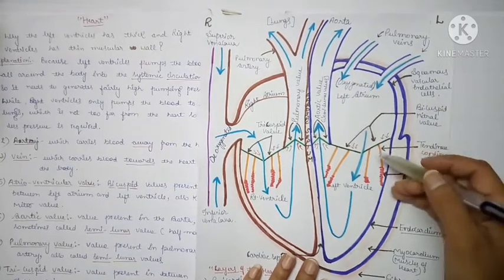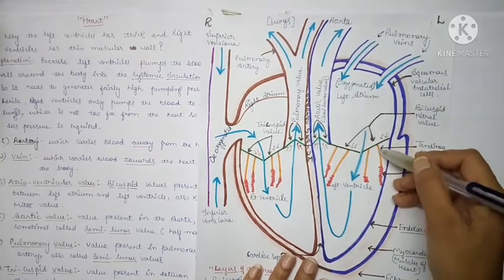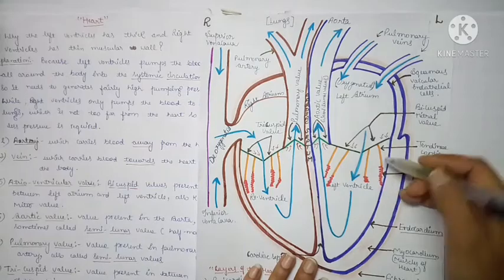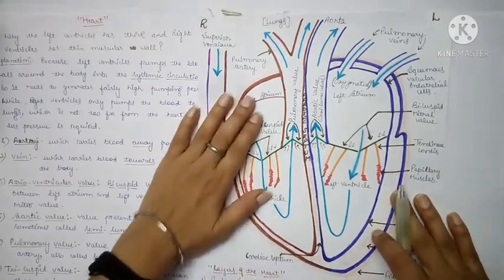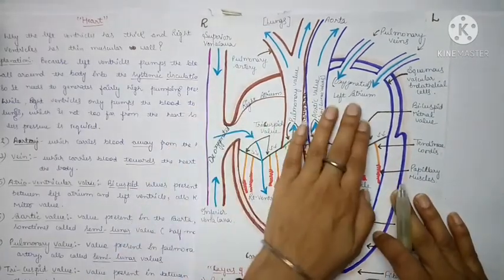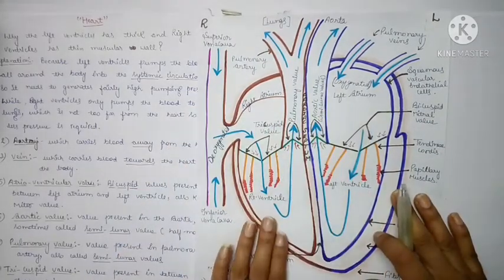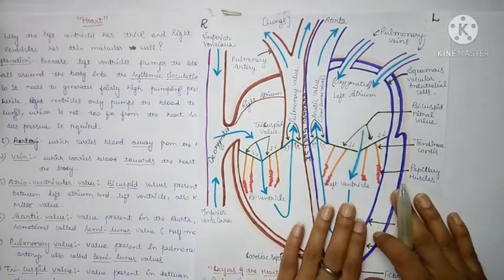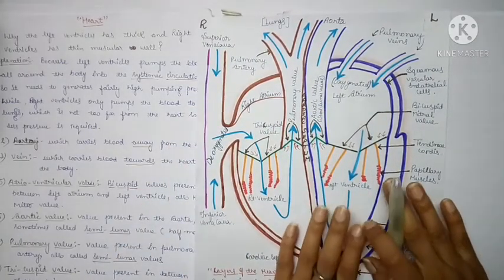So first of all, let's talk about the four chambers of the heart: right atrium, left atrium, right ventricle, and left ventricle. Why are they given these names?